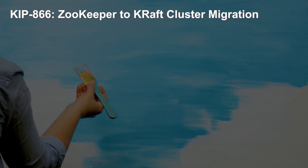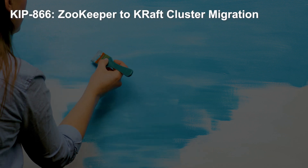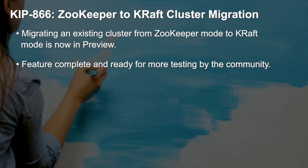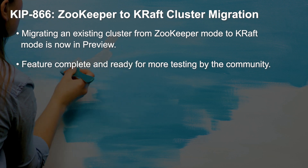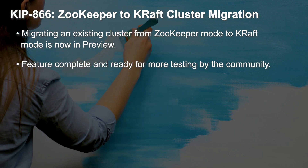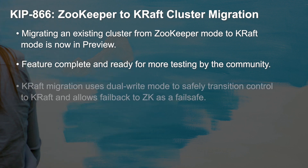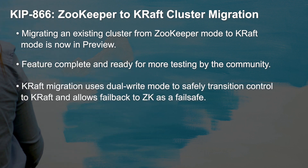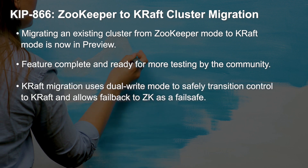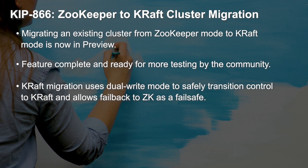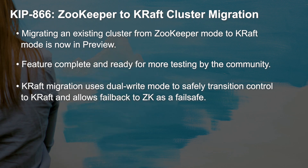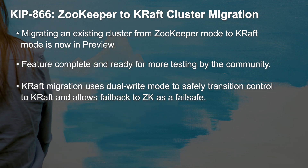Building on KIP 833, we have KIP 866, which introduces feature-complete migrations from ZooKeeper-based clusters to KRaft mode clusters that you're encouraged to test. As an added bonus, after enabling KRaft migration, the cluster will use dual-write mode so that you can safely transition control to KRaft, while also allowing fail-back to ZooKeeper just in case.